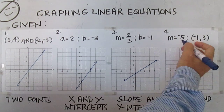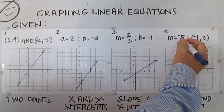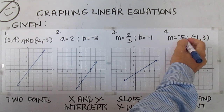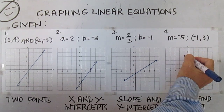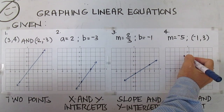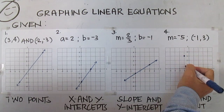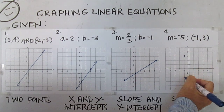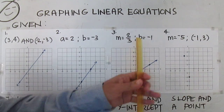From the point, remember that slope is rise over run, so negative five is negative five over one. Move five units down, then one unit to the right, draw a dot, then connect.